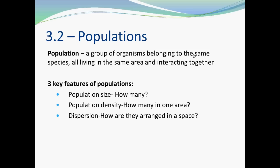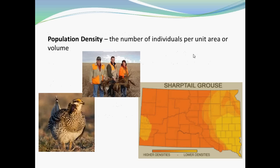Population size is pretty self-explanatory — how many are there. Population density is the number of individuals per unit area or volume of the population. Here's an example of sharptail grouse in South Dakota: on the eastern half of the state there are lower densities, but as you move west they get higher in density, so out west they have a hunting season to help control population numbers.